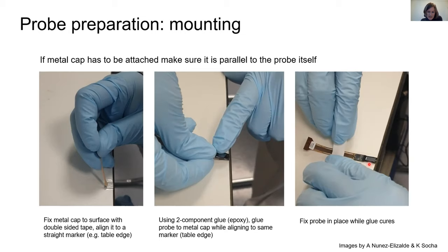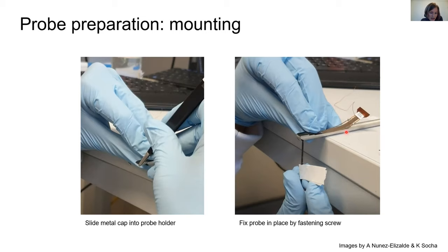Once it's fixed in place, you just fix the probe really securely, for example with tape so the glue can harden. Once the metal cap is on, you can then mount the probe to the rod. This is shown here. You just slide the probe into the rod using forceps like so and then fix the probe with the screw that goes through the rod and onto the probe. You can fasten it. Now we have the probe mounted onto the rod.